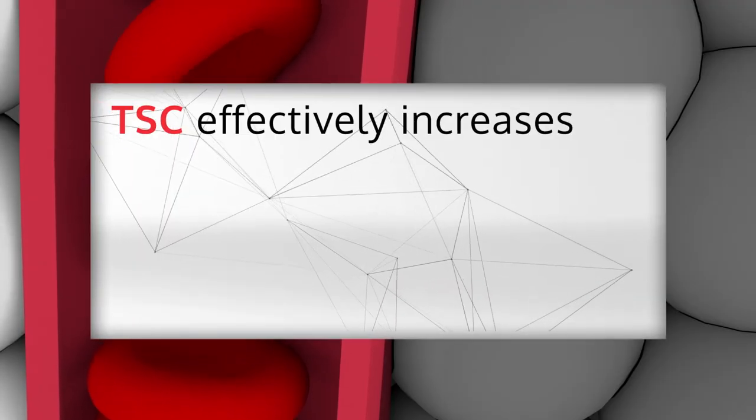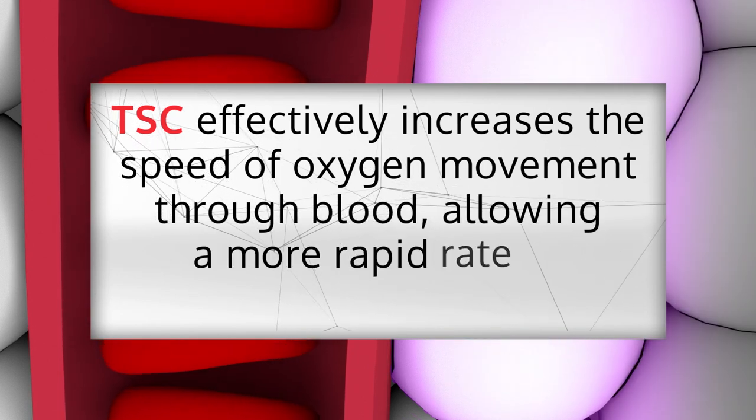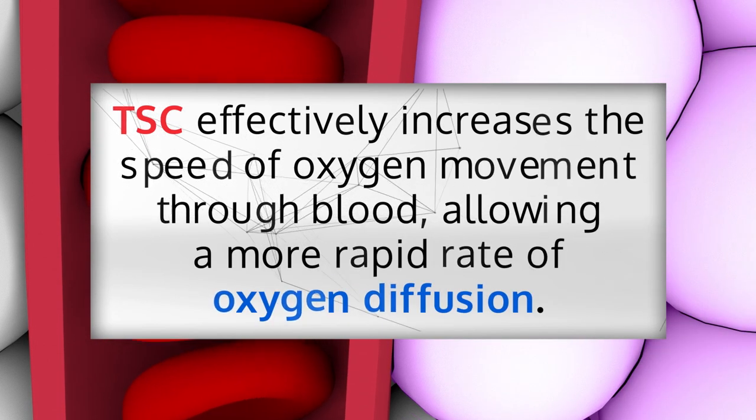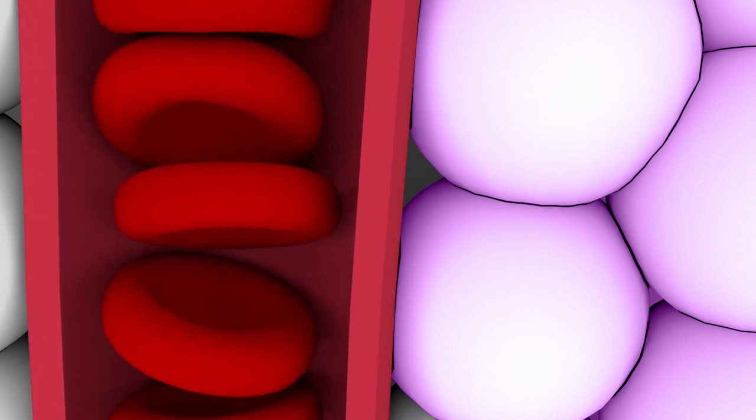TSC effectively increases the speed of oxygen movement through blood, allowing a more rapid rate of oxygen diffusion. This means oxygen-deprived tissue can get more of the oxygen that is essential for life.